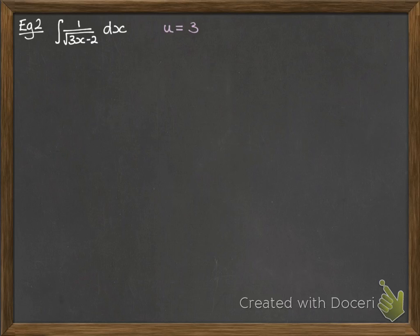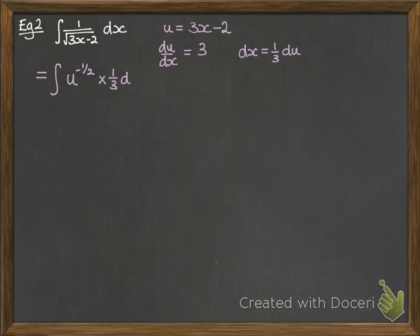Okay, another example. We're going to use the substitution of u equals 3x minus 2 because that's the complicated part of that expression. So now this becomes the integral of u to the minus half. Now replacing the dx, we need to work out what that would be equivalent to in terms of u. So that would be a third du. Now if we integrate this, we get 2u to the half over 3 and then replace our u with the substitution we made at the beginning of 3x minus 2.